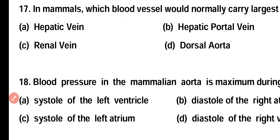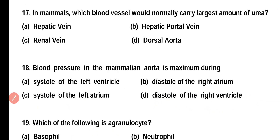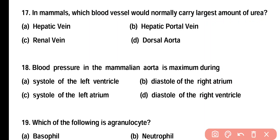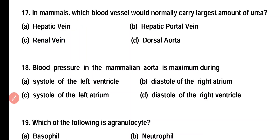Question number 17. In mammals, which blood vessel would normally carry the largest amount of urea? Hepatic vein, hepatic portal vein, renal vein, or dorsal aorta? Correct answer is option A. Hepatic vein carries the largest amount of urea, while the least amount of urea is present in renal vein.